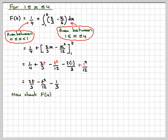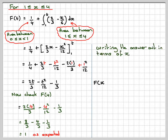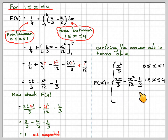We check F of 4 to make sure we reach 1 — the total of all probabilities. 2 times 4 over 3 minus 4 squared over 12 minus 1 third gives 8 over 3 minus 4 over 3 minus 1 over 3, which is 3 over 3 equals 1, as required. Now replacing t with x, the cumulative distribution function is: F of x equals x squared over 4 between 0 and 1; 2x over 3 minus x squared over 12 minus 1 third between 1 and 4; and 1 after that.